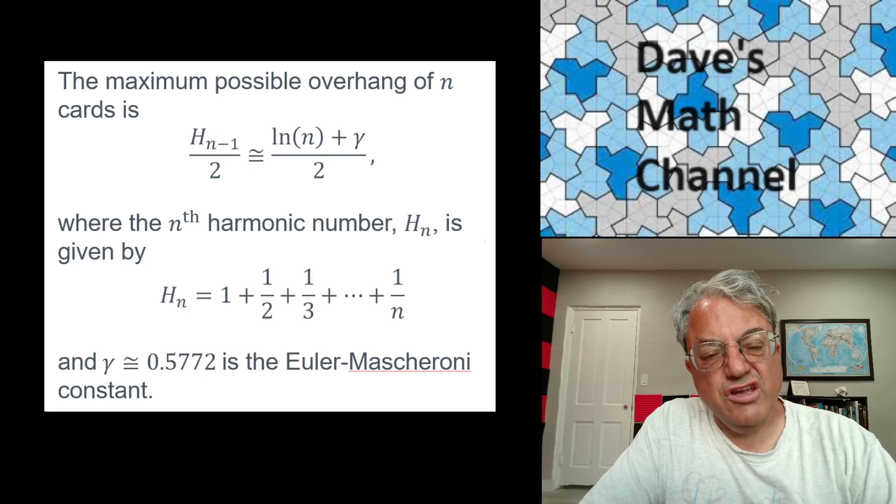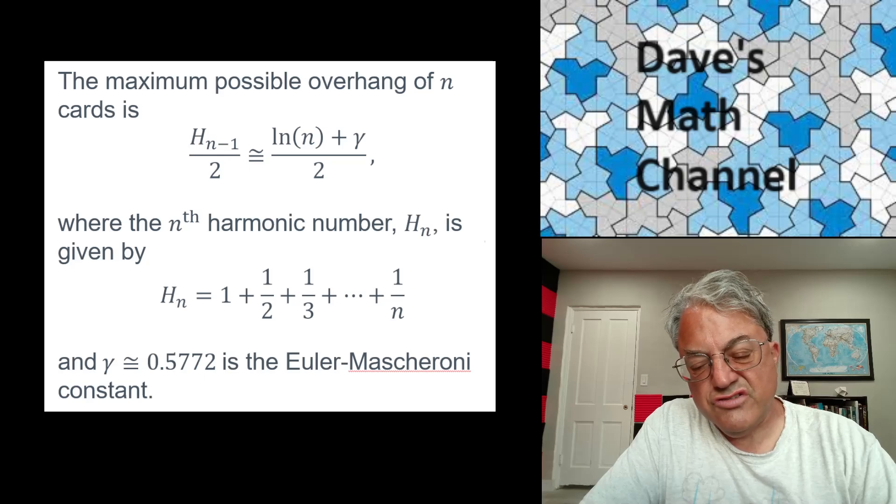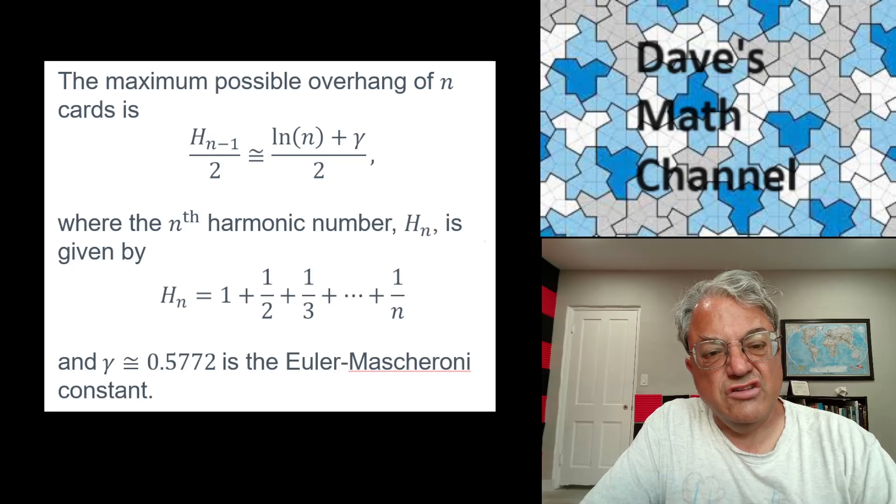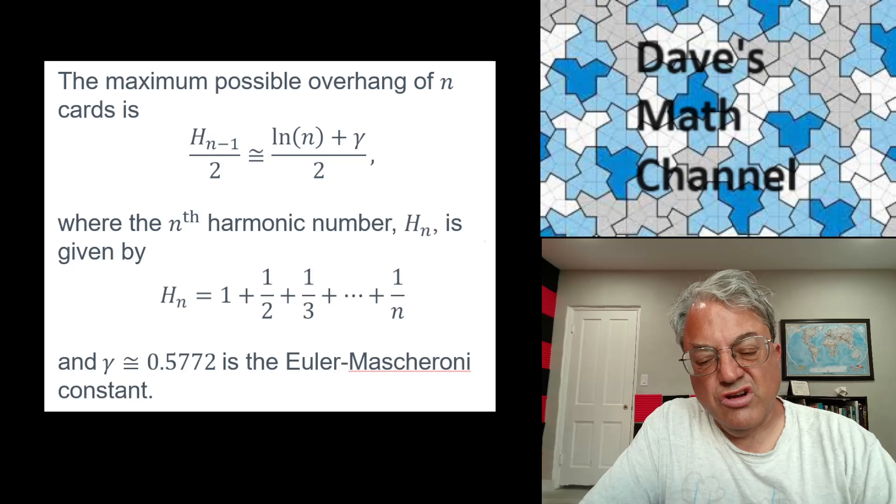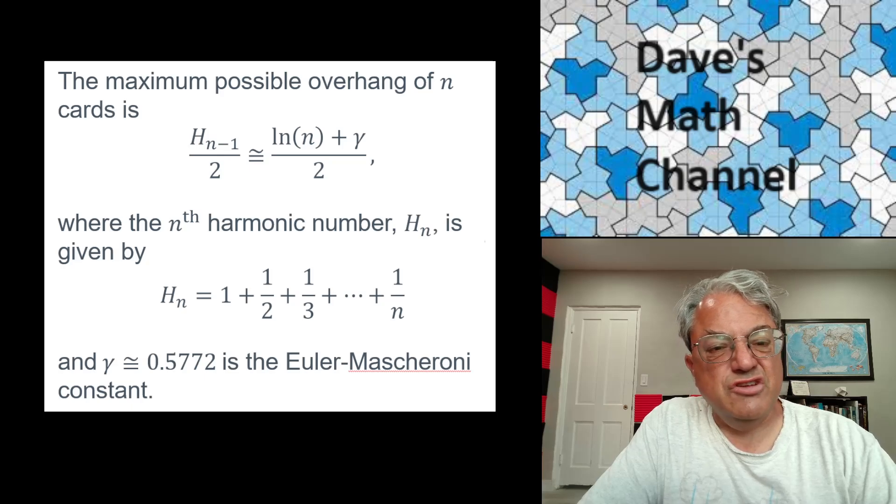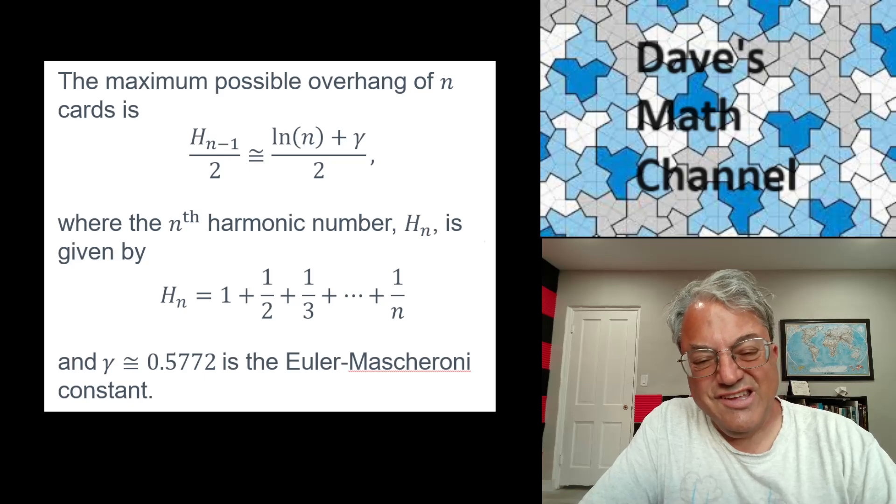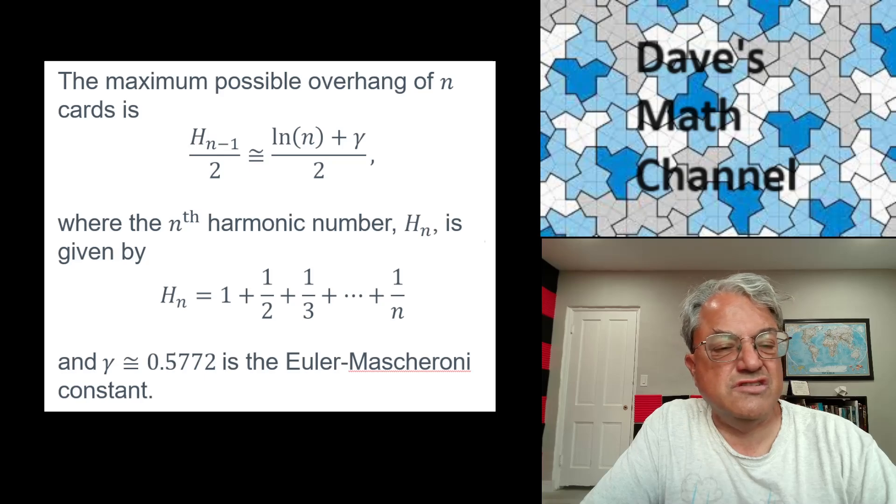So you could extend, if you had an unlimited number of cards, you could overhang the top card as far as you want. But logarithms grow very, very slowly. So you need a lot of cards. If you wanted to overhang it like 10 card lengths, you'd probably need more cards than the number of atoms in the universe or something. So you can't extend it very far in practice, but in principle, you could extend it as far as you want.